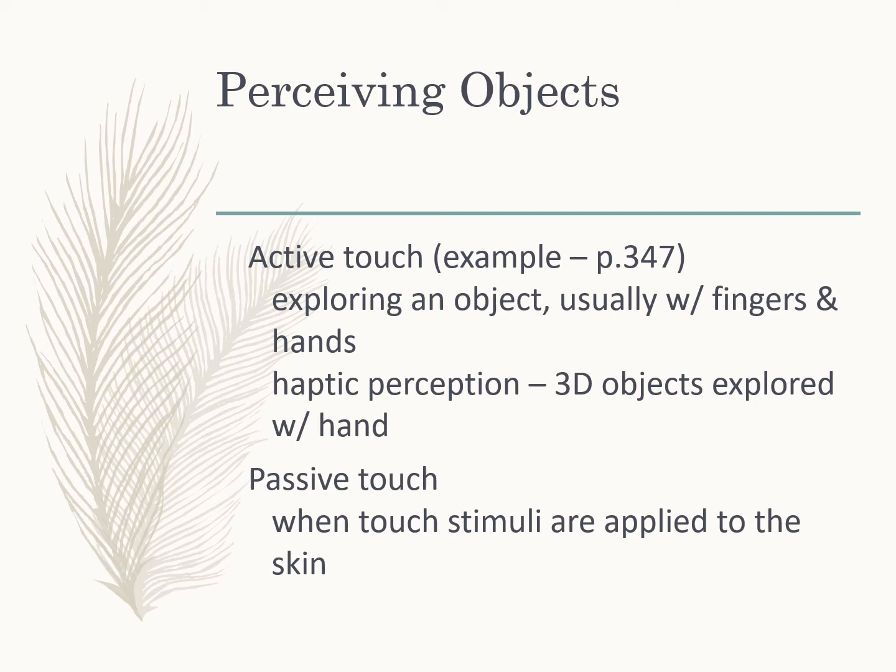For perceiving objects, it's good to distinguish between active touch, where we are exploring an object usually with our fingers and hands moving haptically, and this kind of haptic perception of three-dimensional objects as we explore with our hand. We distinguish that from passive touch, where someone is applying something to our skin. We talk about these kinds of touch really differently — with active touch we talk about the objectness belonging to the object, whereas with passive touch we say things like 'that feels sharp.'